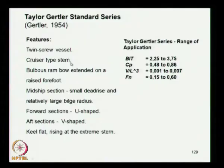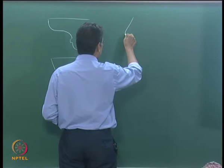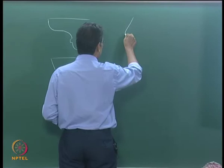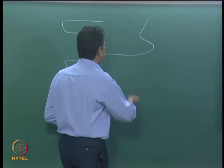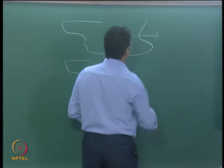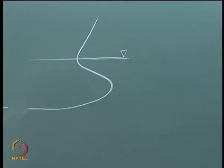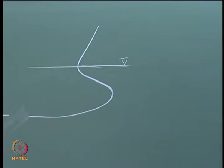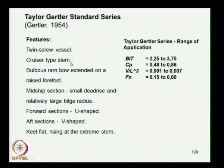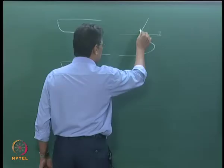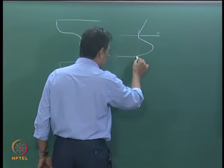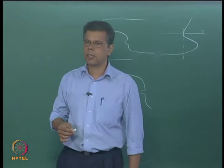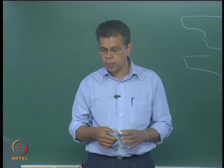The vessel uses a ram bulbous bow, where the bulb form extends forward - the bulb is extended at the fore foot, which is a raised fore foot region. The midship section has a small dead rise of floor and a relatively large bilge radius.